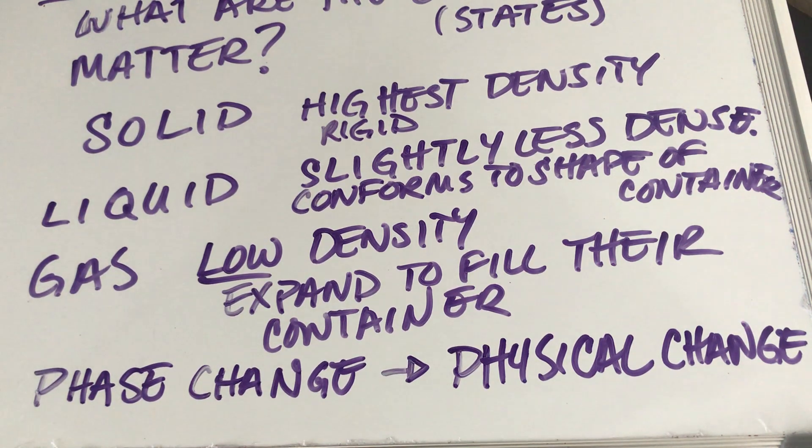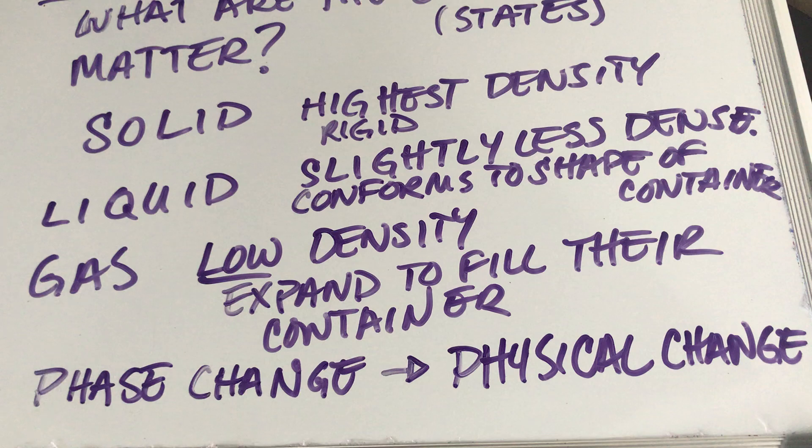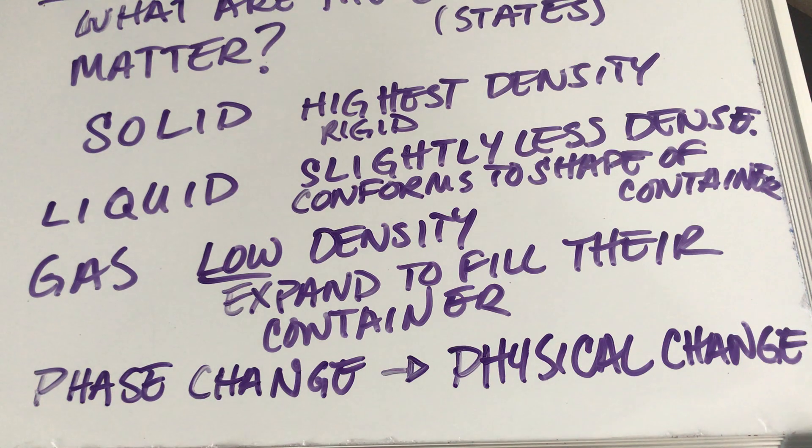Okay, cool. So basically what I need you guys to know for now is what the three phases of matter are, right? Solid, liquid, gas, and to know their relative densities. So solid is the most dense, liquid is less dense, and then gas is the lowest density.